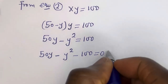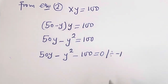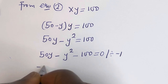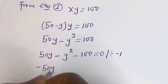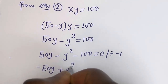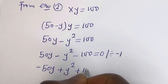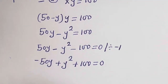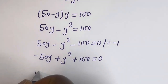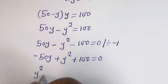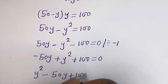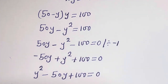Let's put this in standard form. We have y squared minus 50y plus 100 is equal to 0. This is a quadratic equation.